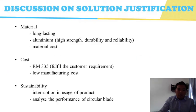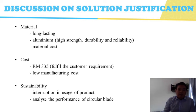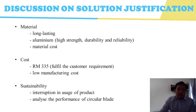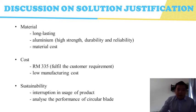In Chapter 9, discussion and conclusion. Firstly, discussion on solution justification. Material selection is a crucial part in manufacturing a product to make it long-lasting. We have selected aluminum as our main material for its high strength, durability, and reliability. Our cost of material is RM335 and the expected sales price is RM500, which fulfills the customer requirement from the survey where the acceptable price range is RM700 to RM2,000. As our product requires only welding, we also have low manufacturing costs. We have analyzed the performance of the circular blade in order to make our product sustainable, as the circular blade is the main cutting part.